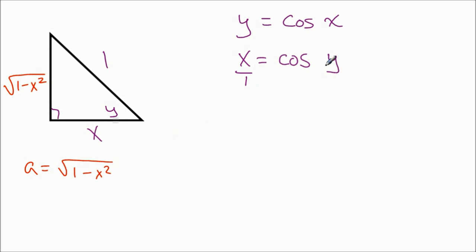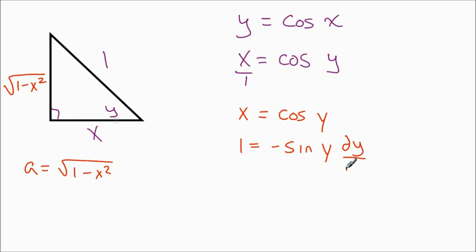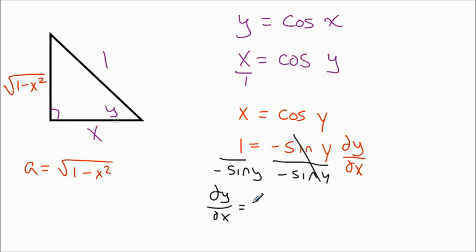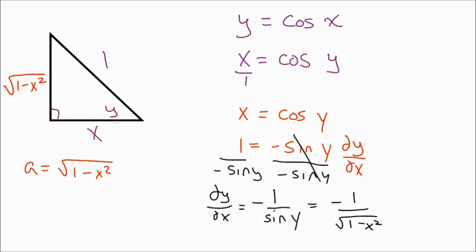Once we have this, we take the derivative of x equals cosine y. We get 1 equals negative sine y times dy/dx. Dividing both sides by negative sine y, dy/dx equals negative 1 over sine y. Since sine is opposite over hypotenuse, this becomes negative 1 over the square root of 1 minus x squared. And there is the derivative of the inverse cosine function.